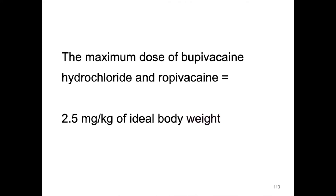The maximum dose of Bupivacaine hydrochloride and Ropivacaine is 2.5 mg per kg of ideal body weight. In addition, hydro-dissection of the transversus thoracic plane may relieve entrapment of the terminal branches of the intercostal nerves, therefore adding to the analgesic effect.